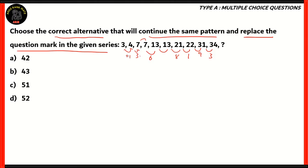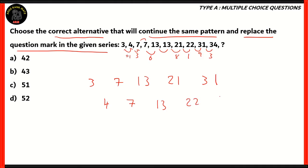In some number series, the question happens to be two number series clubbed into one. If you take every odd position of this series as a separate one — which would be 3, 7, 13, 21, 31 — and every even position as another series — that will be 4, 7, 13, 22, 34 — let's see if this approach works.